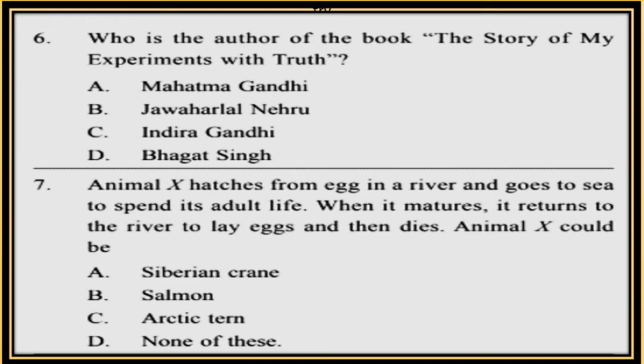Question 7. Animal X hatches from an egg in a river and goes to the sea to spend its adult life. When it matures, it returns to the river to lay eggs and then dies. Animal X could be: A. Siberian Crane, B. Salmon, C. Arctitone, D. None of these.